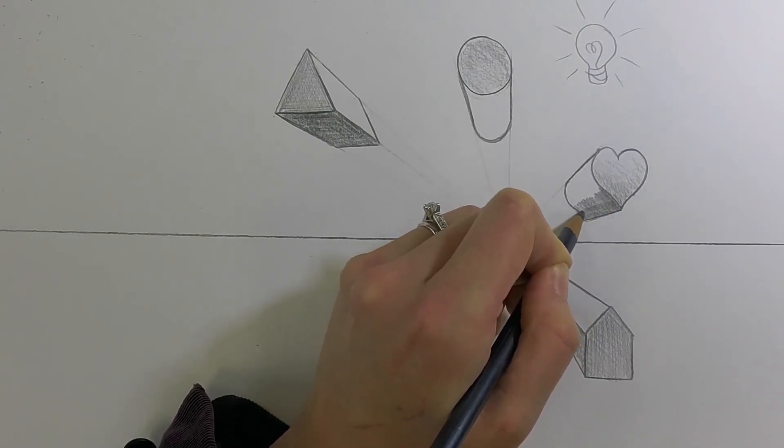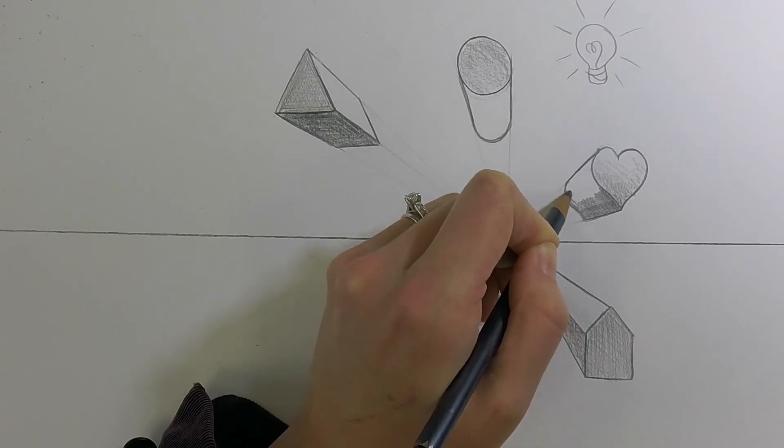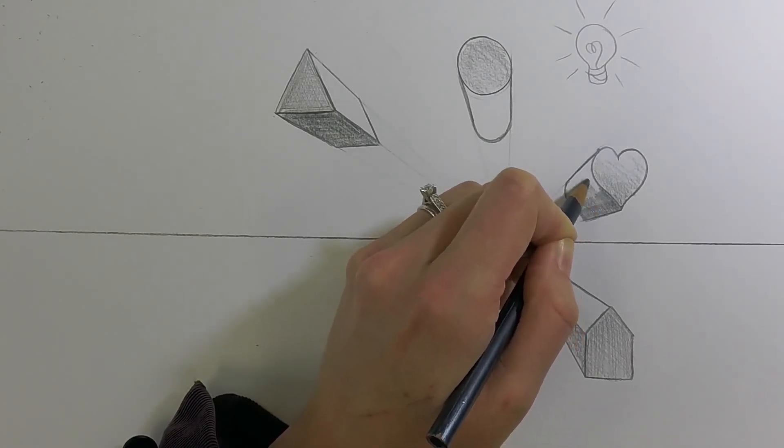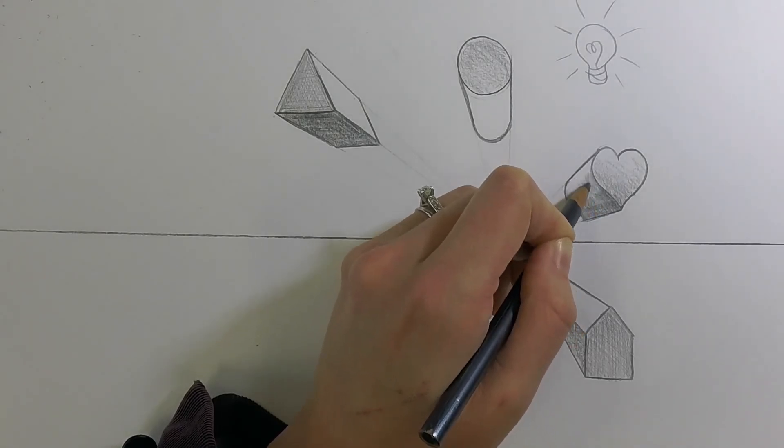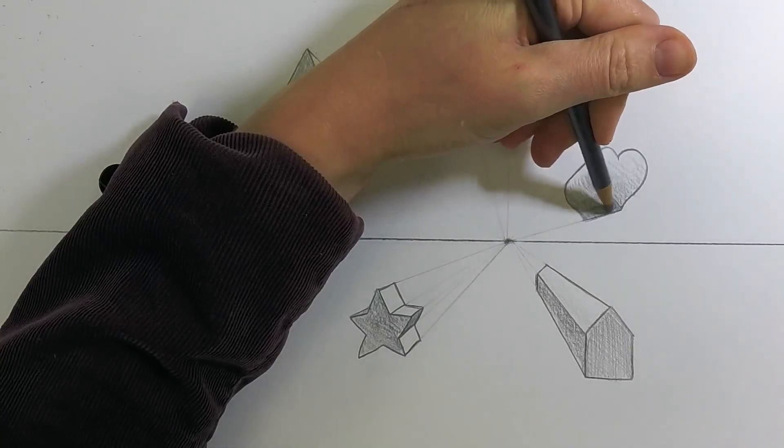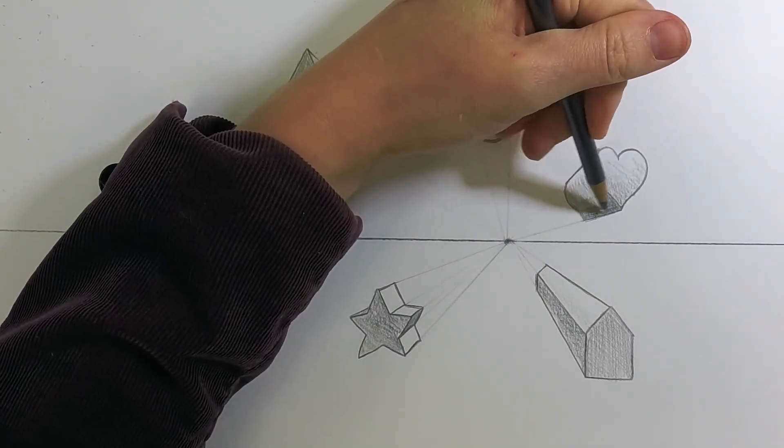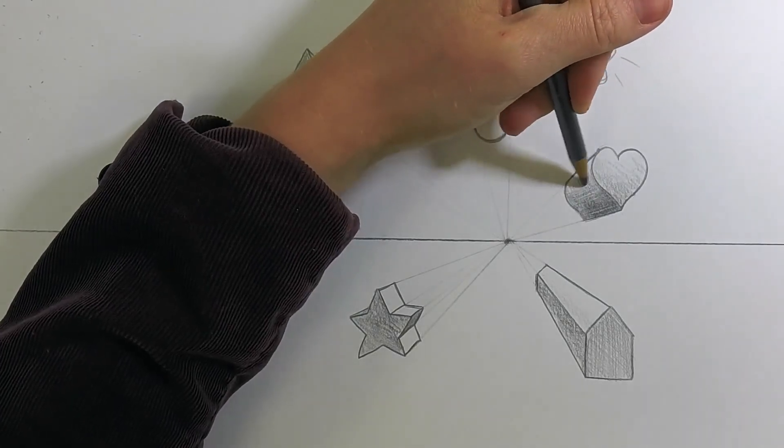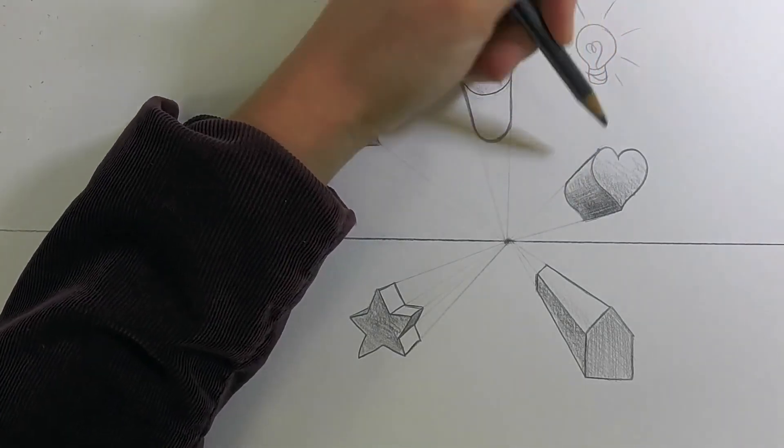But I'm slowly going to get lighter with my shading as I move up. So it's kind of a smooth transition from dark to light. That's going to make it look a little more round. And if you notice my marks, I'm kind of following the shape of the heart with it too. So I'm not just going straight up and down. I'm curving around that edge.